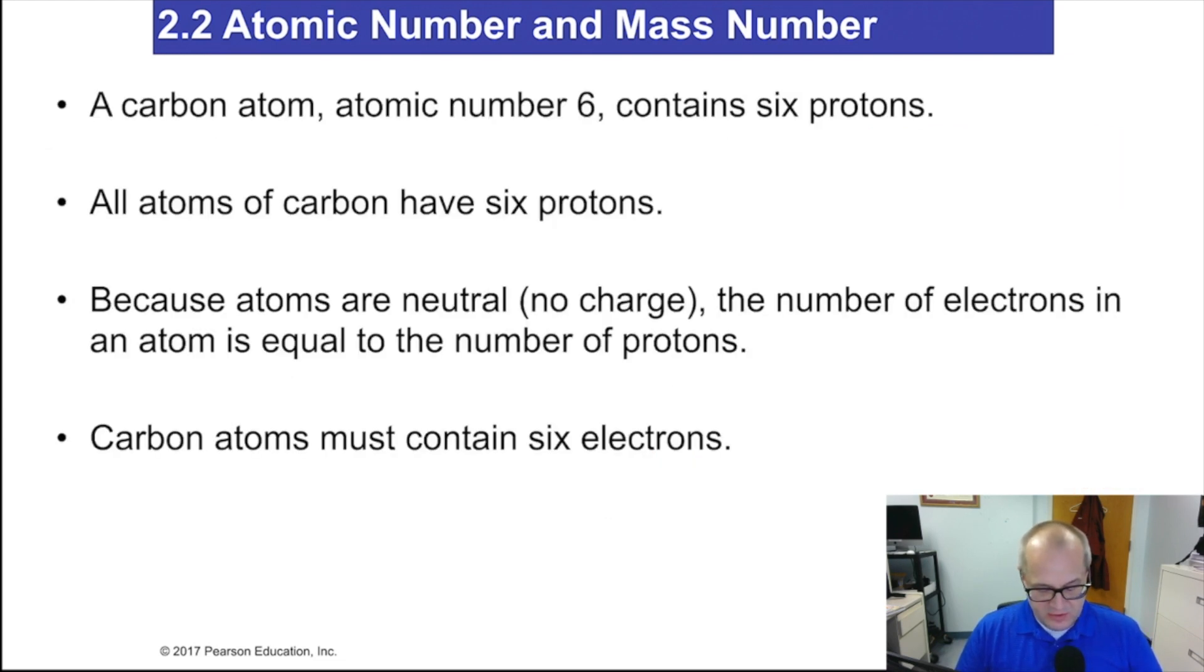Now, let's take a look at this example. A carbon atom has the atomic number of 6. That means it contains 6 protons. Easy enough, right? The atomic number of carbon is 6, contains 6 protons.